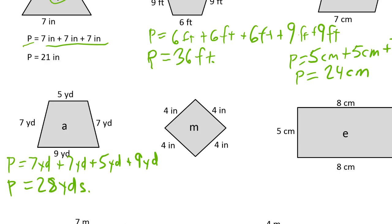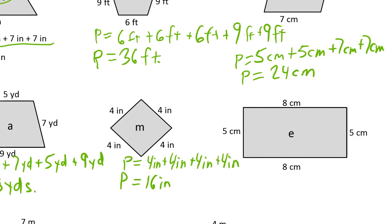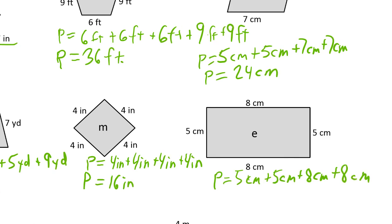M is just four fours. Four times four is 16, or four fours is 16 inches. For E we have two eights and two fives. You can either think of that as two 13s or a 10 and 16. P equals 5 cm plus 5 cm plus 8 cm plus 8 cm. So 10 plus 16 is 26 centimeters.